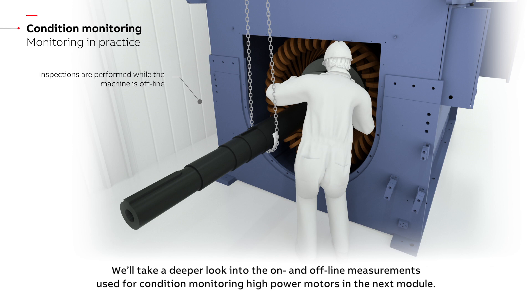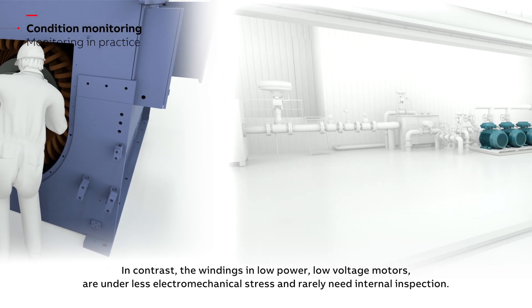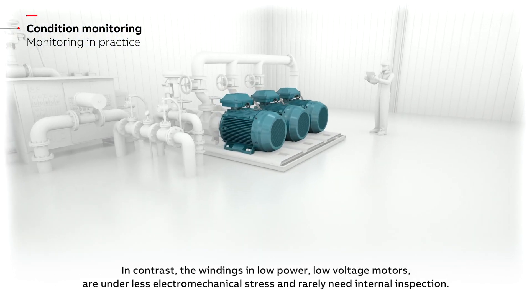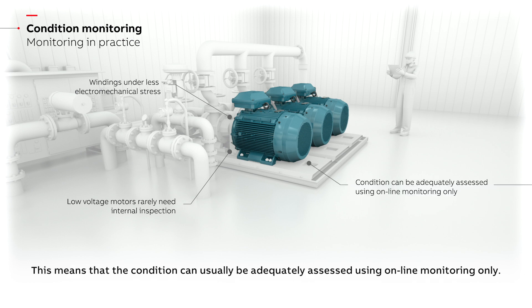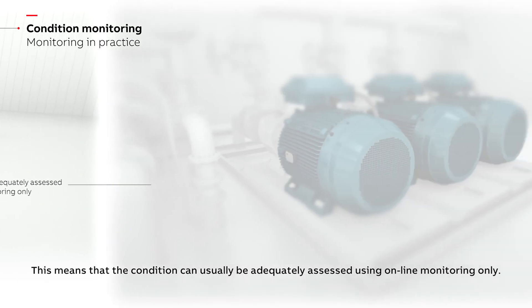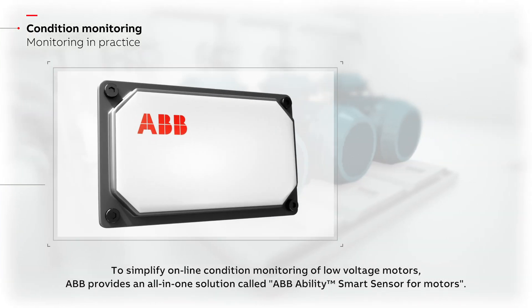In contrast, the windings in low power, low voltage motors are under less electromechanical stress and rarely need internal inspection. This means that the condition can usually be adequately assessed using online monitoring only. To simplify online condition monitoring of low voltage motors, ABB provides an all-in-one solution called ABB Ability Smart Sensor for motors.